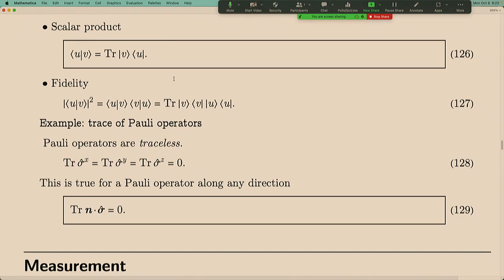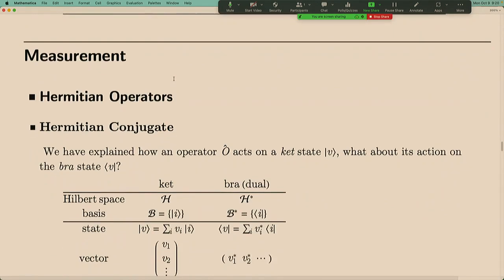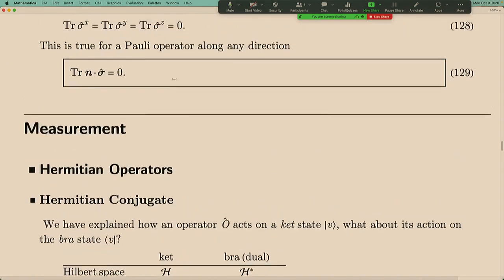There is a property for Pauli operators: all Pauli operators are traceless except for the identity operator, which has trace 2 in this two-dimensional Hilbert space. All three non-trivial Pauli operators have trace zero, and this is also true for any linear combination of Pauli operators.